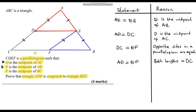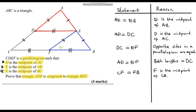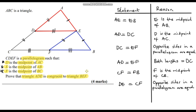We can apply the same logic to prove that length DE equals FB. First, CF equals FB because F is the midpoint of BC. And because this is a parallelogram, DE equals CF — opposite sides in a parallelogram are equal. Therefore DE equals FB, because both of these lengths are equal to CF.